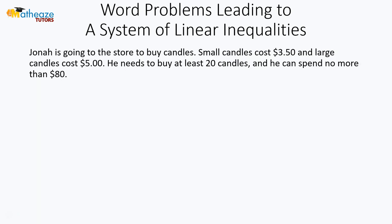Now let's get started with an example. This example reads that Jonah is going to the store to buy candles. Small candles cost $3.50, and large candles cost $5. He needs to buy at least 20 candles, and he can spend no more than $80. So let's take a look at the important keywords. We have small candles and we have large candles.